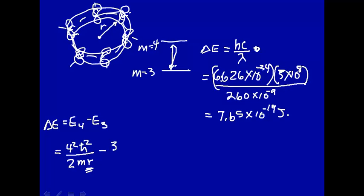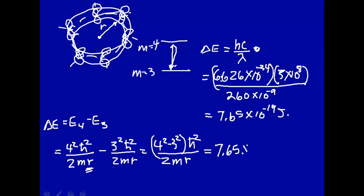Subtract that off from the m equals 3 state, so that's 3 squared h-bar squared over 2mr squared. We'll combine that: 4 squared minus 3 squared times h-bar squared over 2 times m (this is mass, not quantum number) times r squared. That's what we predict quantum mechanically for delta E, and we're going to equate that with what we measure experimentally, 7.65 times 10 to the minus 19 joules. The moment of inertia is mr squared.